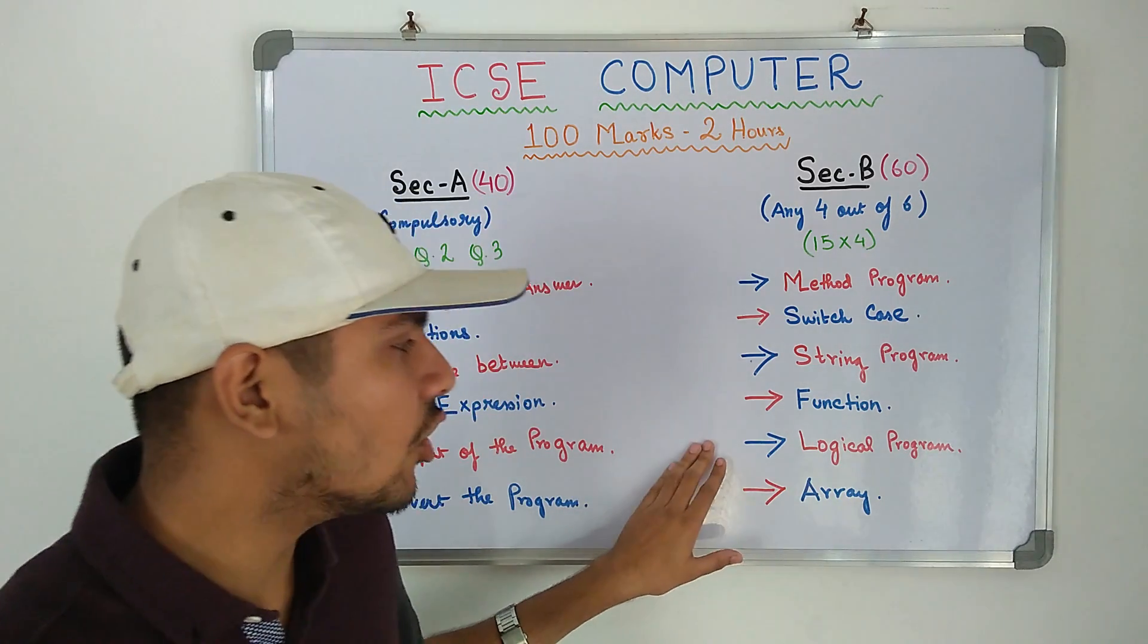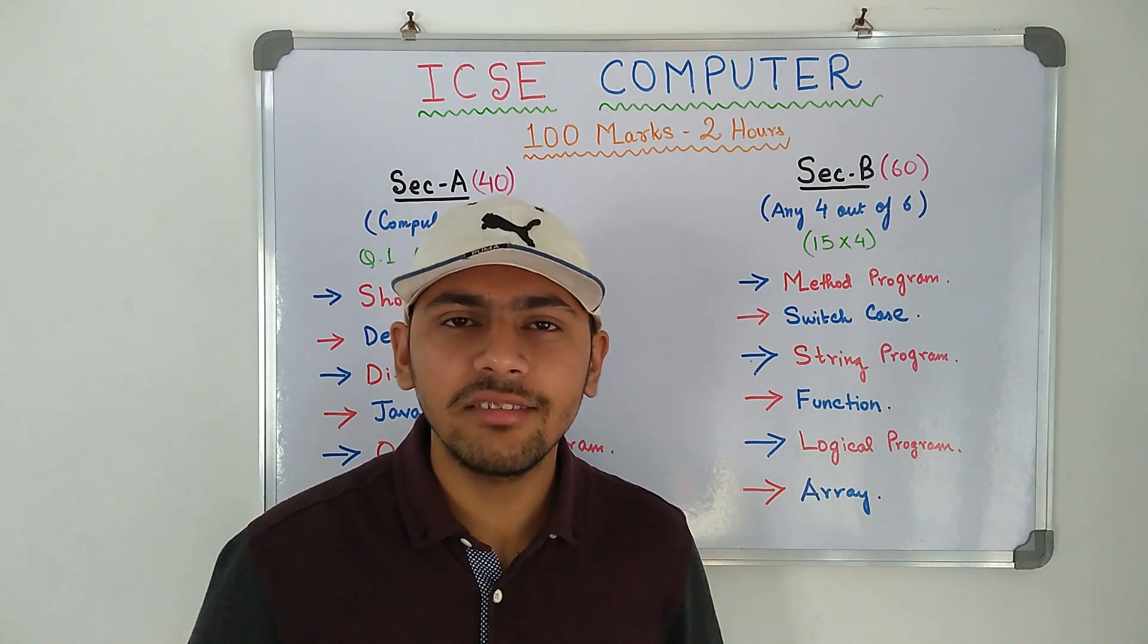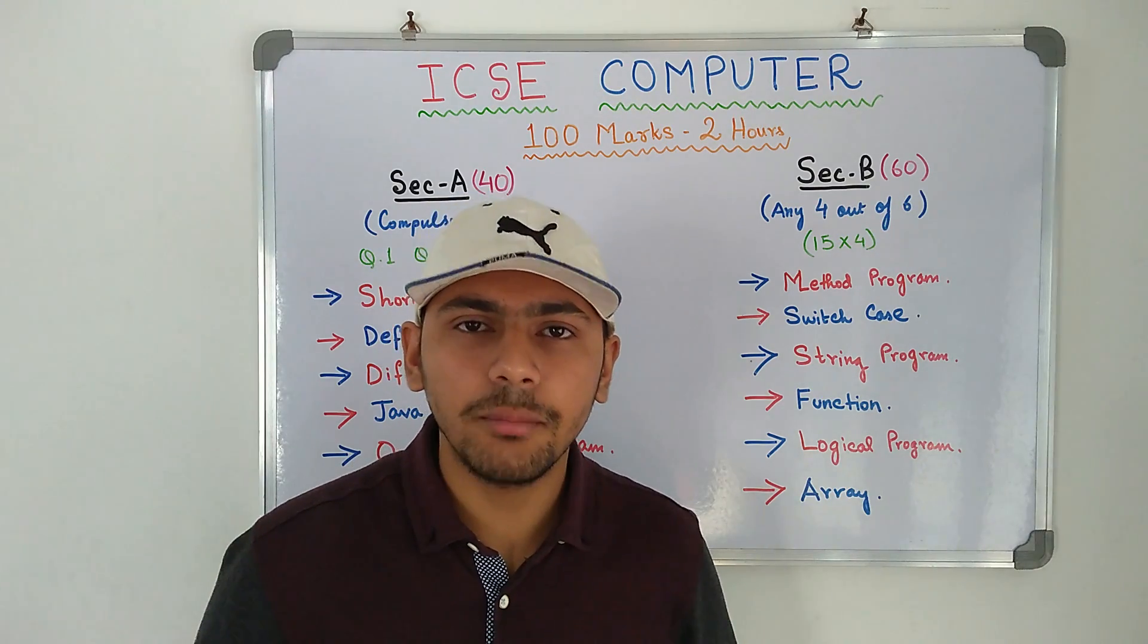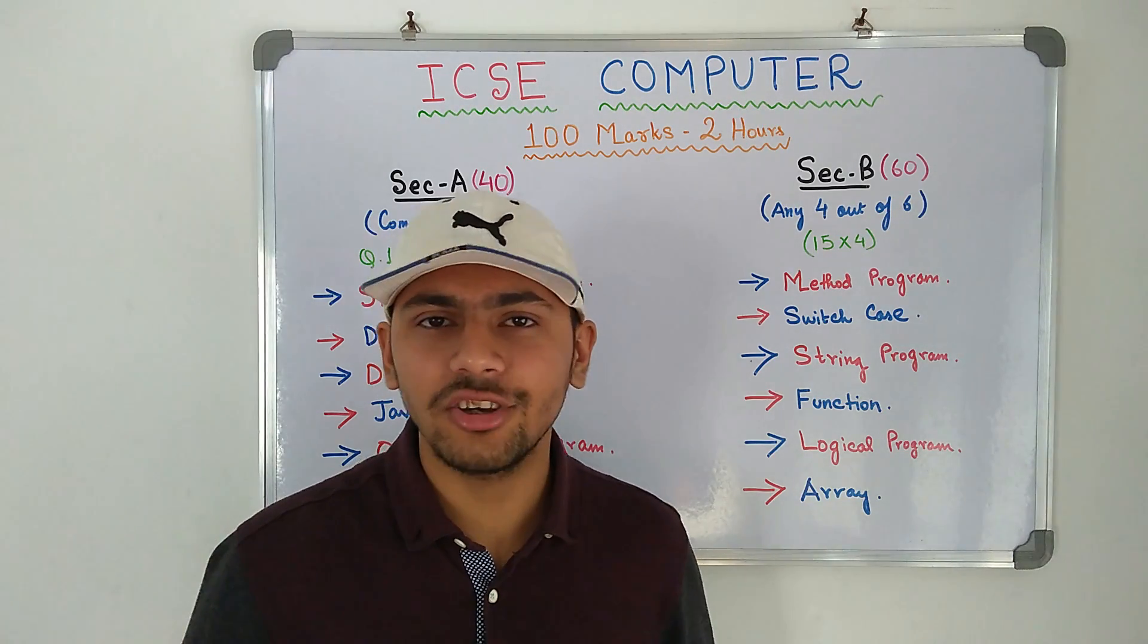Then you have the logical program. Now logical program is the most interesting thing over here. A logical thing will be given and you have to write the program on it like Krishnamurti number, neon number, magic number, Armstrong number and things of this sort.